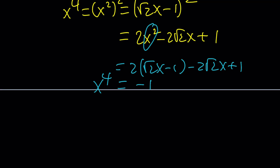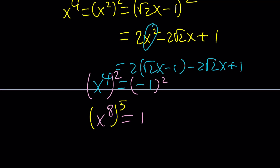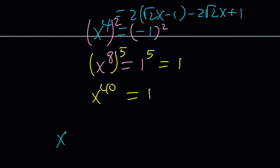Now I want the eighth power, so I square both sides: x to the eighth equals positive 1. From there, raising both sides to the fifth power gives x to the 40th equals 1. So you get to the 40th power right away without dealing with all the linearizations. And as before, x to the 40th plus 1 over x to the 40th is just 1 plus 1, which equals 2.